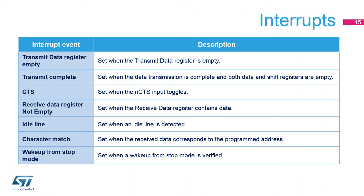Several LPUART events can provide an interrupt. The transmit data register empty flag is set when the transmit data register is empty and ready to be written. The transmit complete flag is set when the data transmission is complete and both data register and shift register are empty. The CTS flag is set when the NCTS input toggles. The received data register not empty flag is set when the received data register contains data ready to be read. The idle line flag is set when an idle line is detected. The character match flag is set when the received data corresponds to the programmed address.